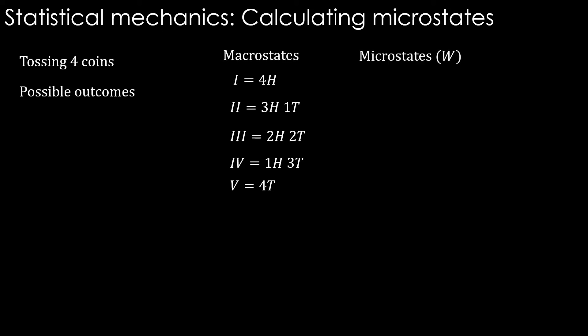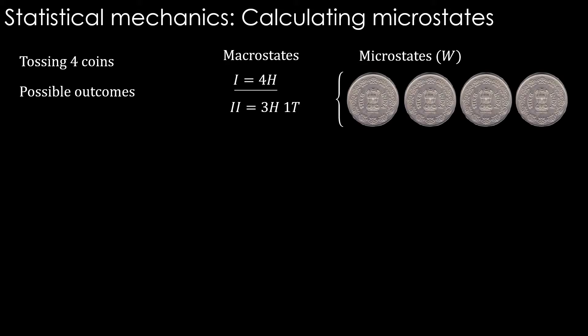Let's see the microstates. Consider configurations 1 and 2, the 4 head and 3 head cases. In the 4 heads case, all coins are showing heads. There is only one way we can do it, so the microstate is 1. We can use combinatorics to know this: 4 coins and 4 heads, therefore calculate 4C4 which is 1.